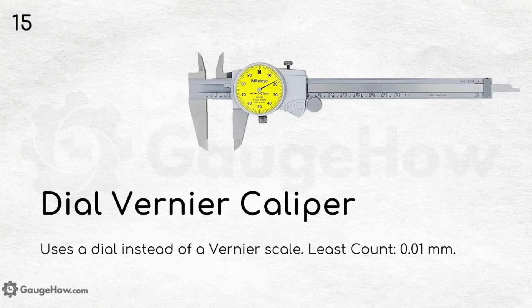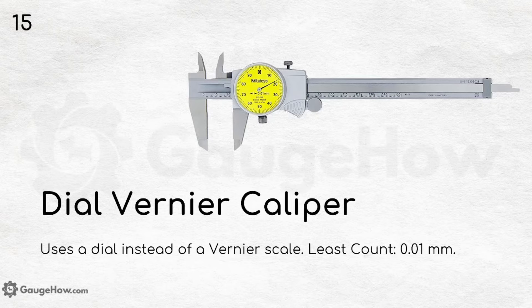Dial vernier caliper. It is used for the same caliper measurements as the normal vernier caliper, but the difference is that it uses a dial instead of a vernier scale. The least count is 0.01 mm.